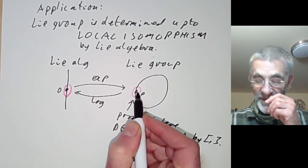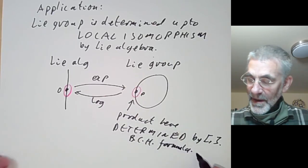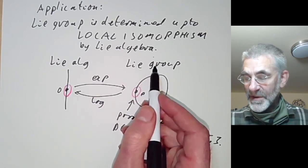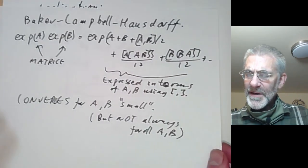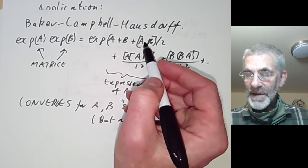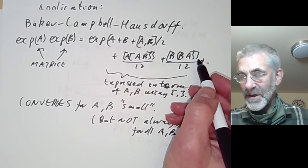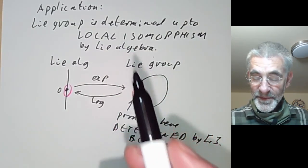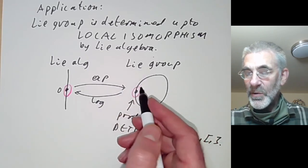The Baker-Campbell-Hausdorff formula simply tells you how to multiply two elements in the image of exp. This means there's no need for higher order terms when approximating a Lie group. The Lie bracket is a second order term; you might imagine that higher terms wouldn't be expressible in terms of the Lie bracket, requiring some complicated fourth-order expression. But that doesn't happen over the reals. The Baker-Campbell-Hausdorff formula says the Lie bracket is all you need to determine the Lie group, at least near the identity.